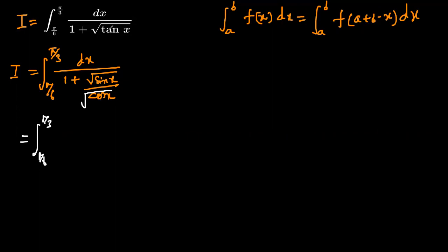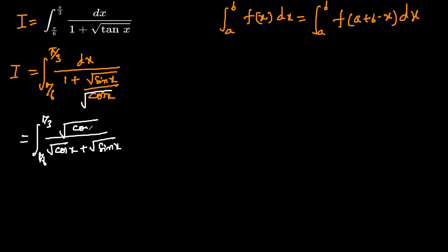The under root is over both sin and cos, so taking LCM this can be written as under root cos x divided by the quantity (under root cos x plus under root sin x), and the cos x in the denominator can be brought up, giving us √cos x dx.